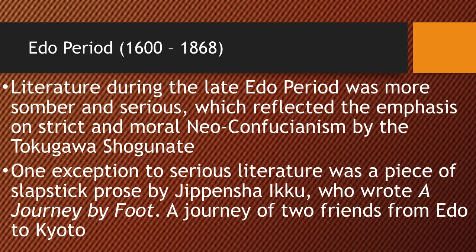Literature in the second half of the Edo period — as opposed to the first half with haiku, plays, and love stories — is a lot more somber and conservative. This reflects the emphasis on Neo-Confucianism by the Tokugawa shoguns, as the shogunate becomes more conservative in the second half. There is one exception to serious literature: a piece of slapstick prose by Jipencha Ikkyu, who wrote A Journey by Foot — a humorous story about two friends who travel from Edo to Kyoto. But that's really the only exception; most other literature was very serious.